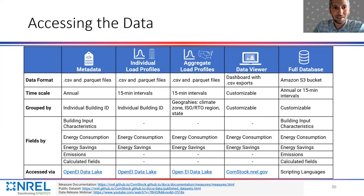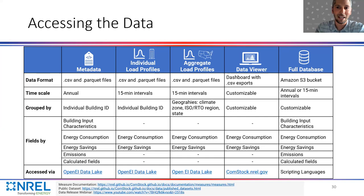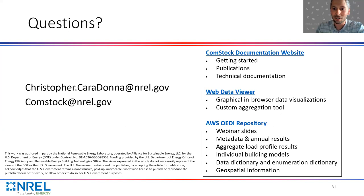This summarizes the datasets released with the Comstock tool containing all measure and baseline data. The building models are also available — hundreds of thousands of OpenStudio energy models, or millions if you include all upgrades. We also have all time series results, a data viewer, and an S3 database you can query. There's a webinar linked introducing how to access this data. You can also email us at the addresses shown. That concludes my presentation and I'm happy to answer questions.